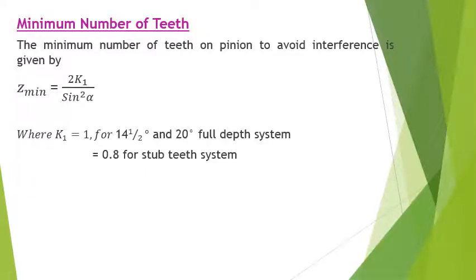The minimum number of teeth can also be calculated using the equation: z_min = 2k₁ / sin²α, where k₁ = 1 for the 14.5 degree and 20 degree full depth involute systems, and k₁ = 0.8 for the stub teeth system. For the 20 degree full depth involute system, it is safe to assume the number of teeth on the pinion as 18 or 20. Once the pinion teeth are decided, the velocity ratio is used to calculate the number of teeth on the gear.